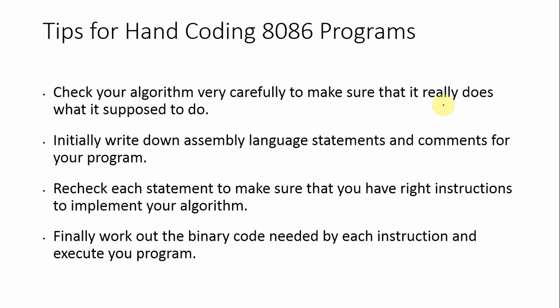These are the tips used for hand coding the 8086 microprocessor. First tip: check your algorithm very carefully to make sure it really does what it is supposed to do. Second tip: initially write down assembly language statements and comments for your program. Third tip: recheck each statement to make sure you have the right instructions to implement your algorithm. Fourth tip: finally, work out the binary code needed by each instruction and execute your program.